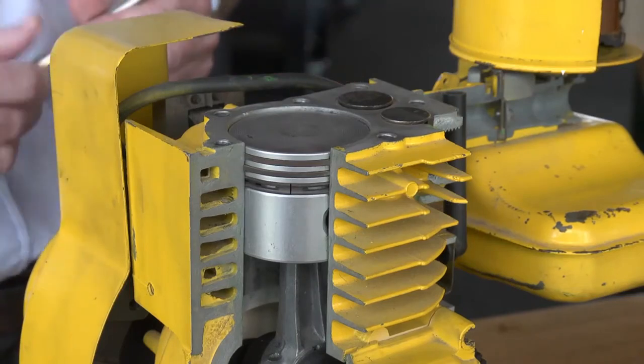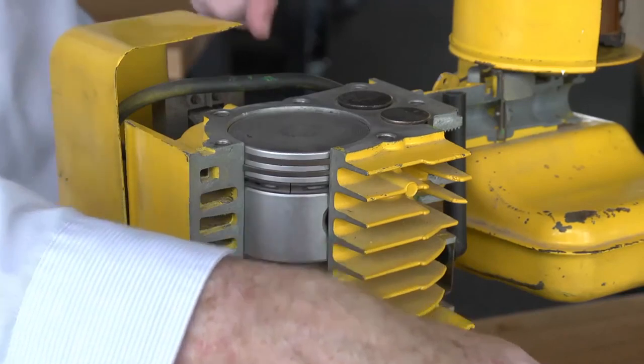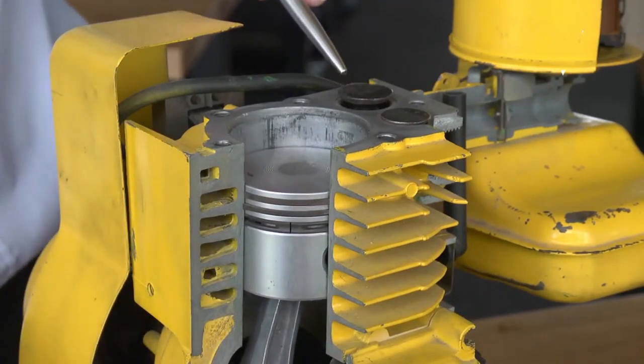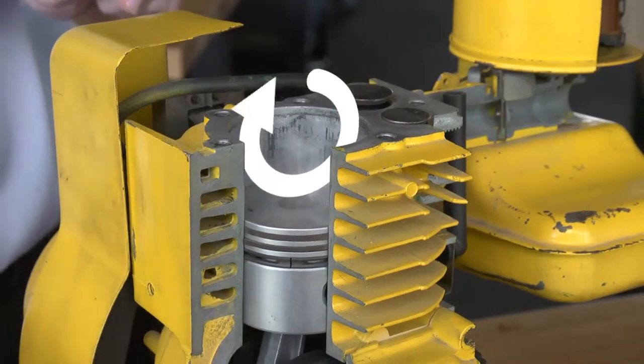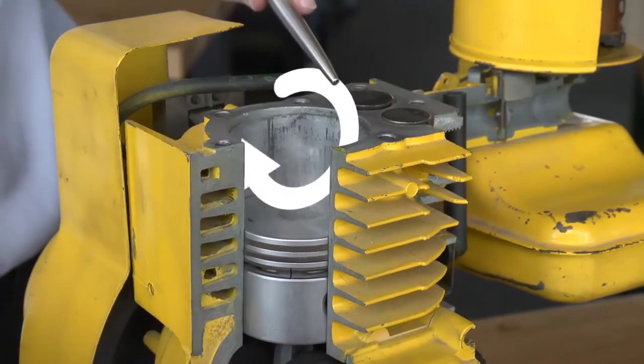The first stroke has the piston traveling down. As the piston travels down, the intake valve opens and we draw the air-fuel mixture into the engine. Near the bottom of the stroke, the intake valve closes.